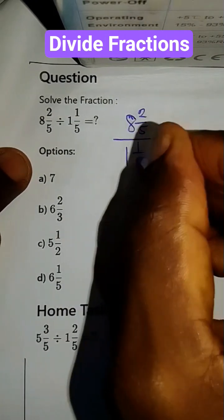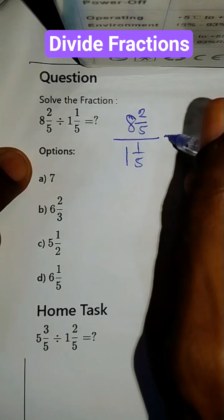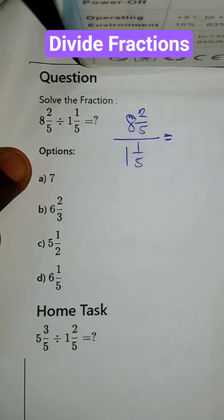All over 1 and 1 all over 5, which is the same thing as writing an improper fraction.